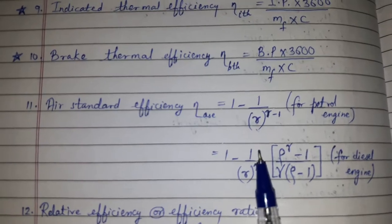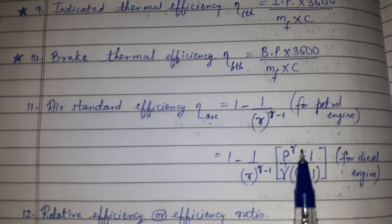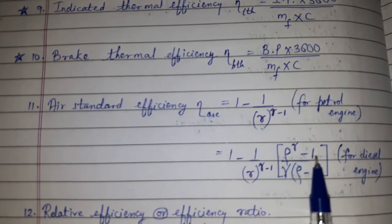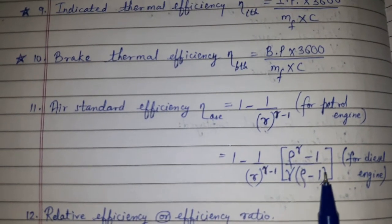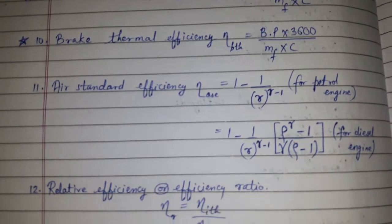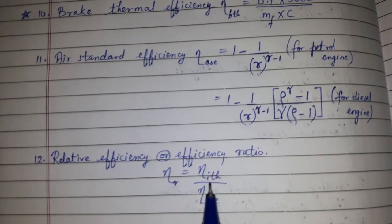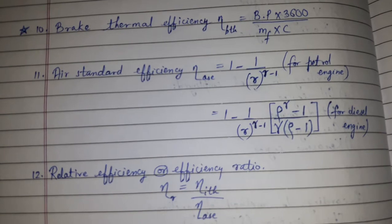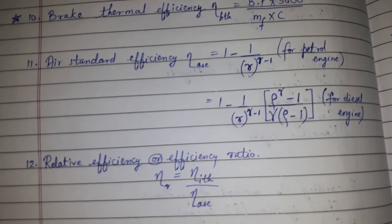1 minus 1 upon small r raised to γ minus 1 into ρ^γ minus 1 upon γ into (ρ minus 1) for diesel engine. Relative efficiency or efficiency ratio is equal to indicated thermal efficiency upon air standard efficiency.